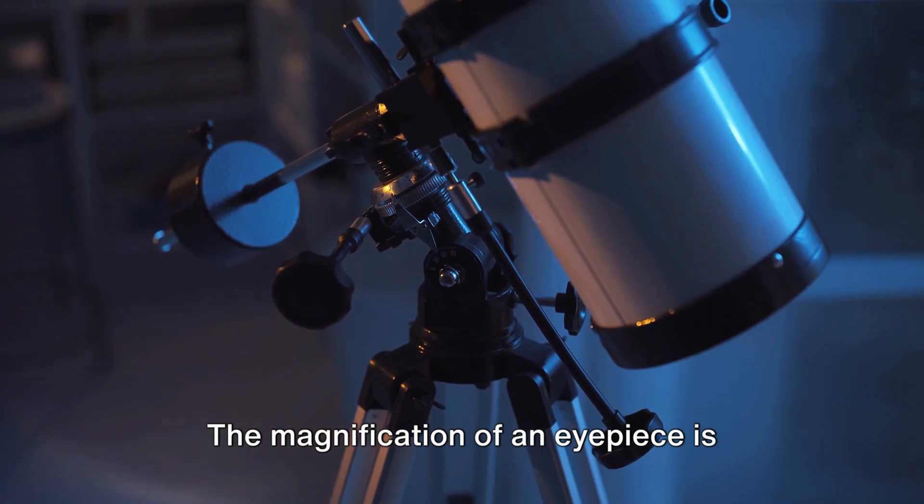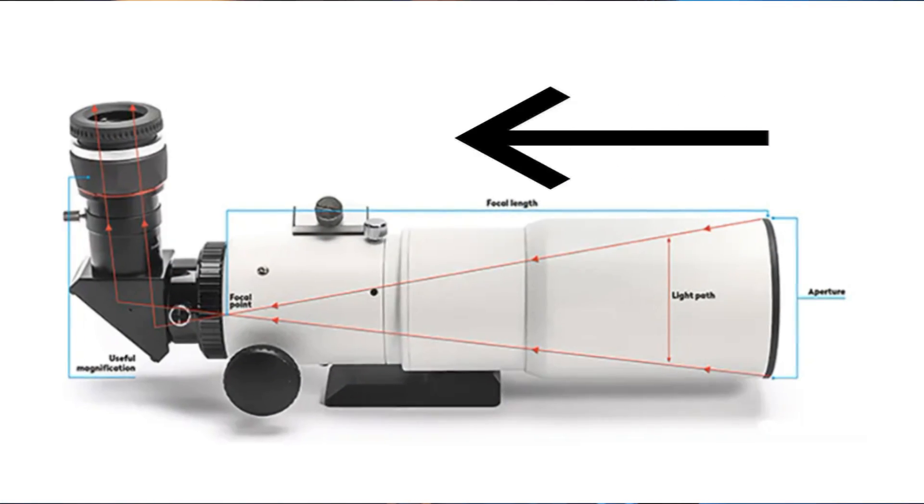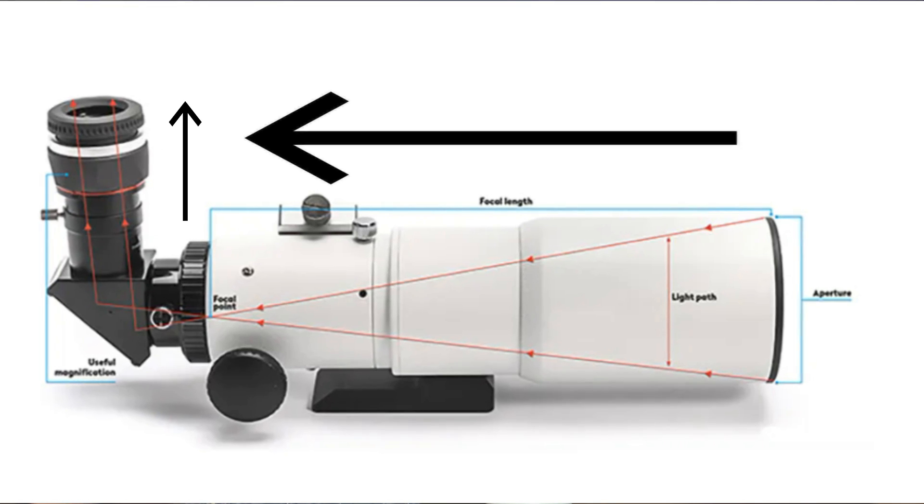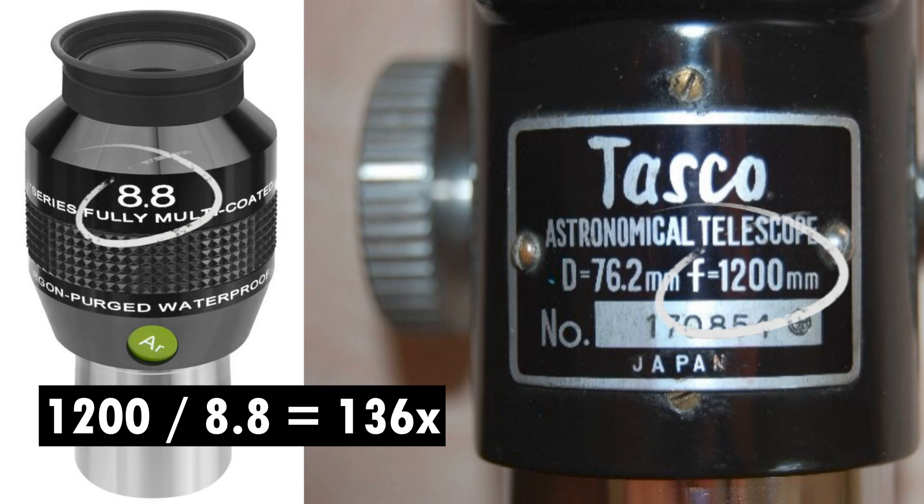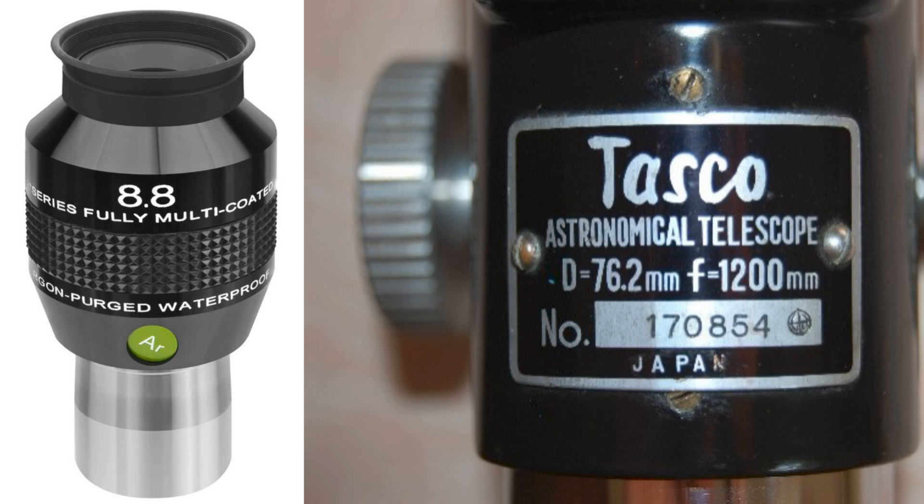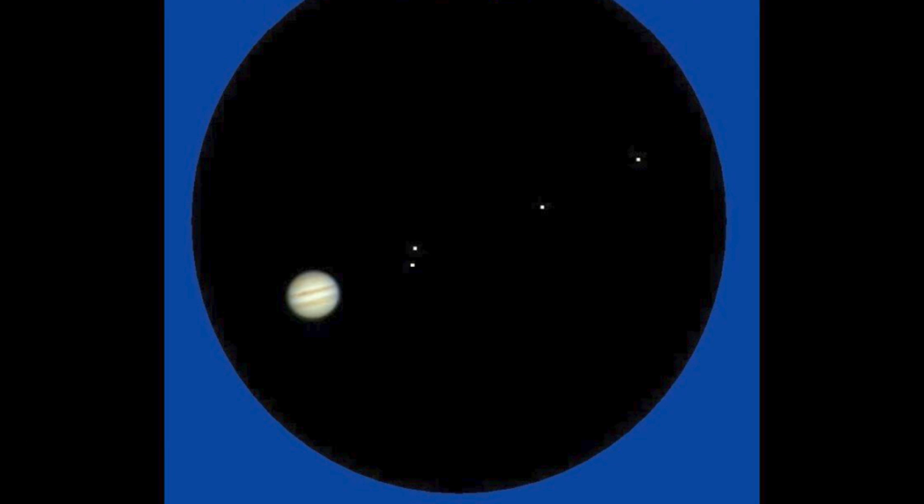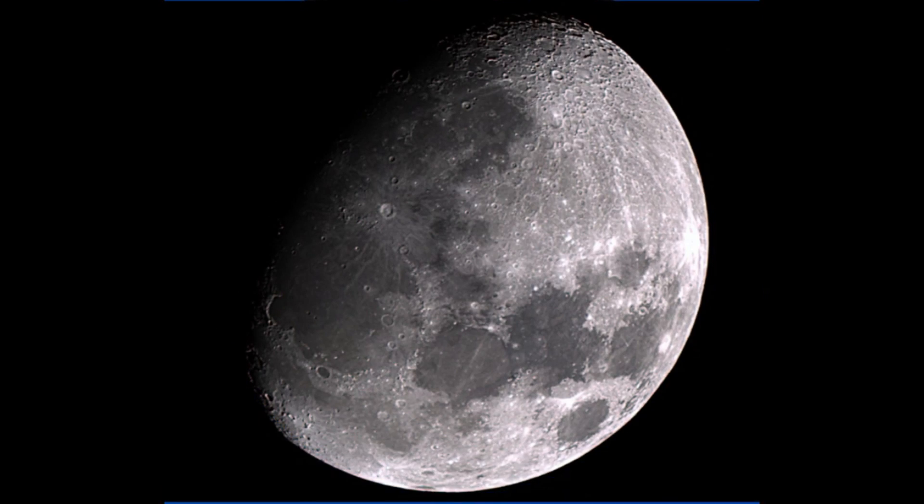The magnification of an eyepiece is simply the telescope's focal length divided by the eyepiece's focal length, and these numbers are often found on the side of both telescopes and eyepieces for convenience. This inverse relationship means that a shorter eyepiece focal length results in higher magnification, making distant objects such as the planets or craters on the moon appear closer.